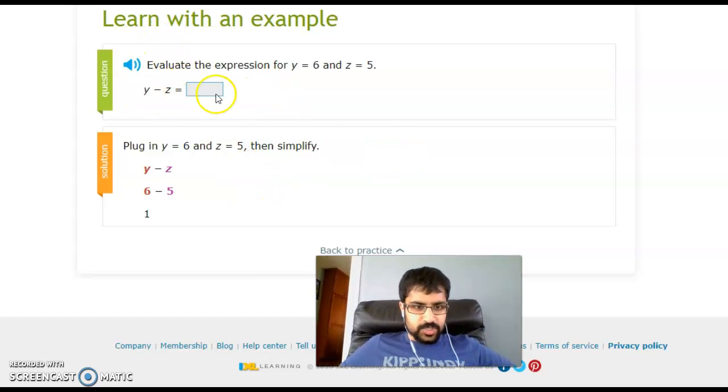When you evaluate an expression, you're usually going to have a couple of letters that represent numbers, and then they'll give you the values of those letters, those variables. So once they give you the values, all you need to do is replace every instance of that variable with whichever value that they say it is equal to, and then you can simplify using the operations that are in place.